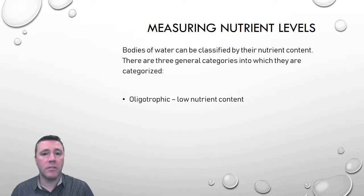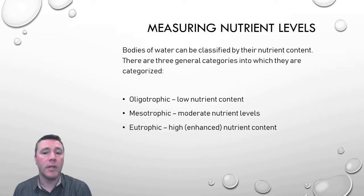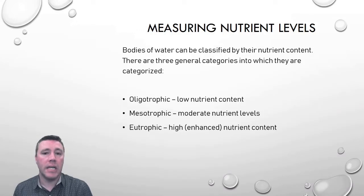Each of these subsequent levels, like mesotrophic and eutrophic, essentially increases the amount of nutrients as we go up those levels. That also means that primary productivity — photosynthesis — is increasing, and water quality is therefore decreasing.